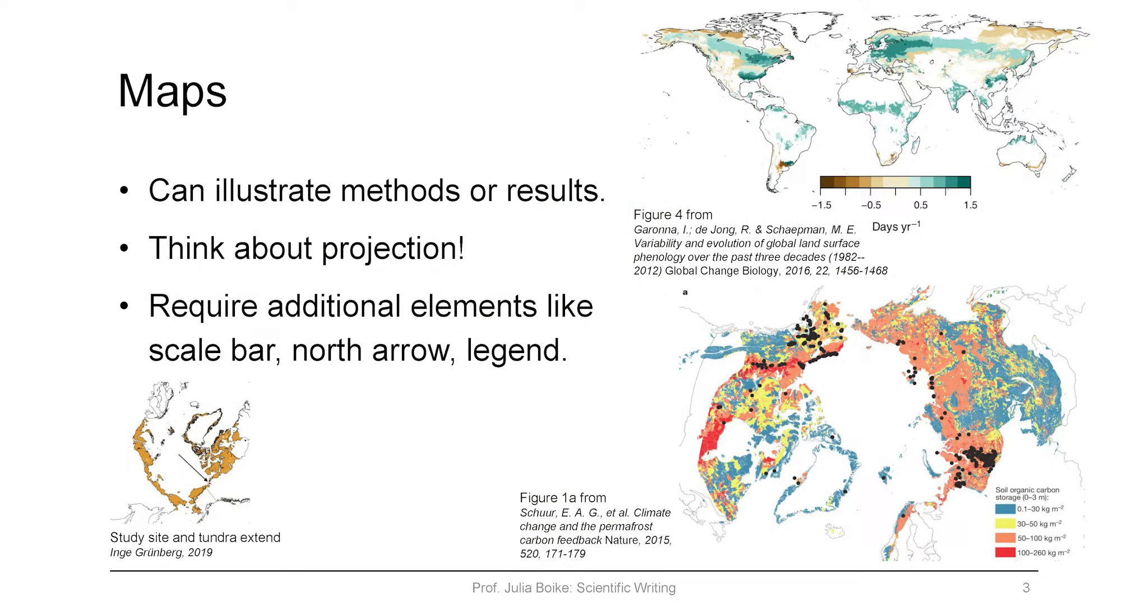This is a global study from a friend of mine who did her PhD in Zurich working on NDVI and phenology and lengthening or shortening of growing seasons. She had a global data set and this is like a standard projection that you would often use for global maps. Also the color scale is very different compared to the other study below, which is from an Arctic study showing how much organic carbon is stored in permafrost soils.